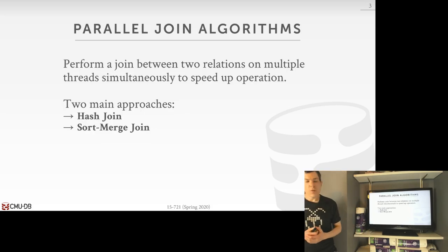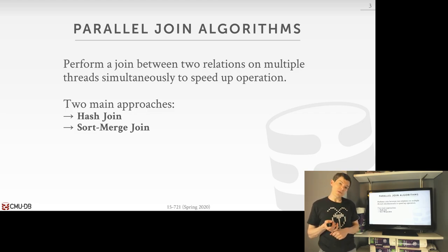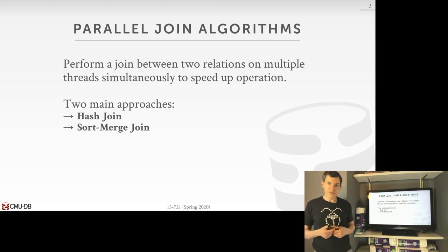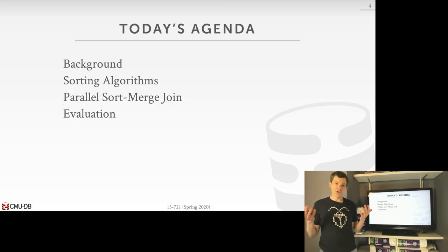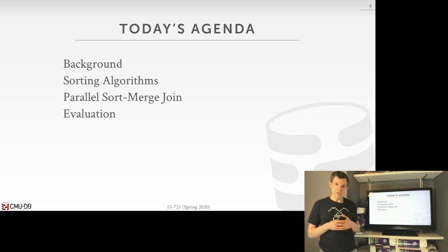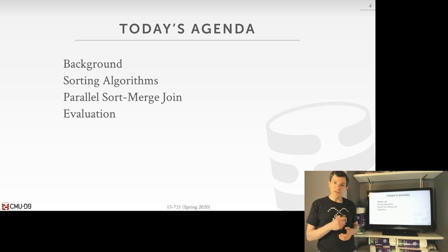This lecture and the previous one have been about parallel join algorithms. Last class we focused on hash joins, since that's the most commonly used join algorithm in an OLAP system. Today we'll focus on the sort-merge join. We'll start with background on what a sort-merge join looks like, then talk about sorting algorithms — specifically how to vectorize and parallelize sorting from Intel's approach. Then we'll combine it into a parallel sort-merge join and finish with the evaluation from the assigned ETH reading.